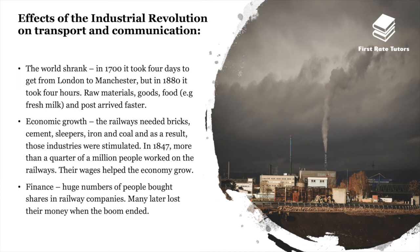The effects of the Industrial Revolution on transport and communications were profound. First, the world shrank: in 1700 it took four days to get from London to Manchester, but by 1880 just four hours. Raw materials, goods, and foods such as fresh milk arrived faster. Second, this impacted economic growth — railways needed bricks, cement, sleepers, iron and coal, stimulating those industries. In 1847, more than a quarter of a million people worked on the railways. Third, huge numbers of people bought shares in railway companies, stimulating the growth of finance.